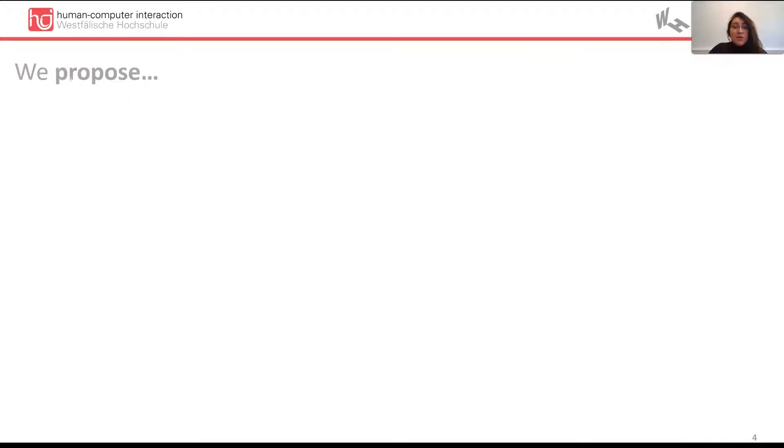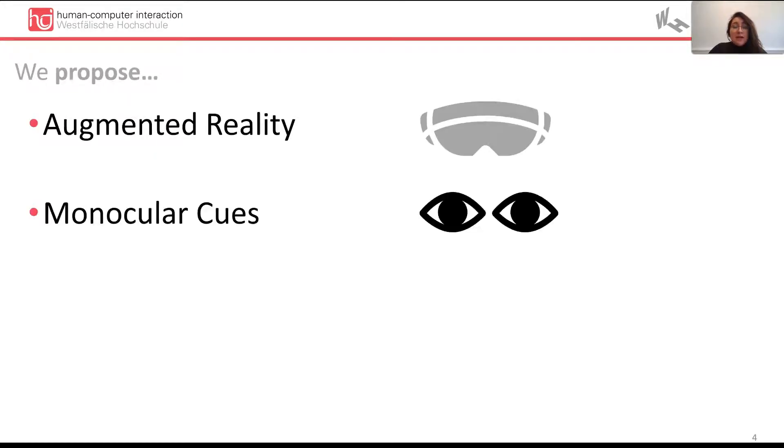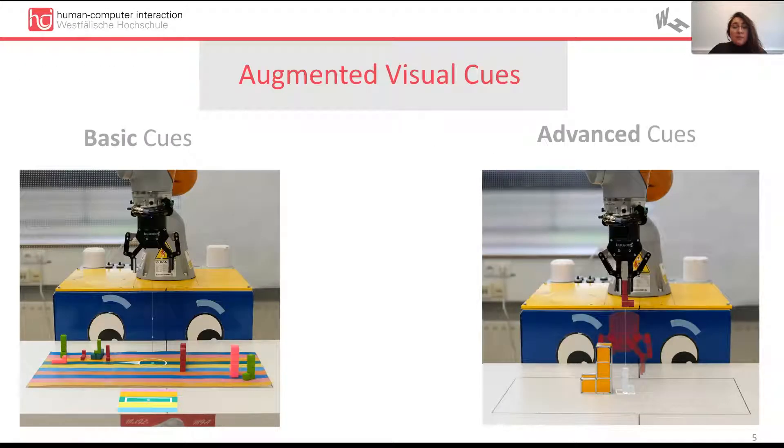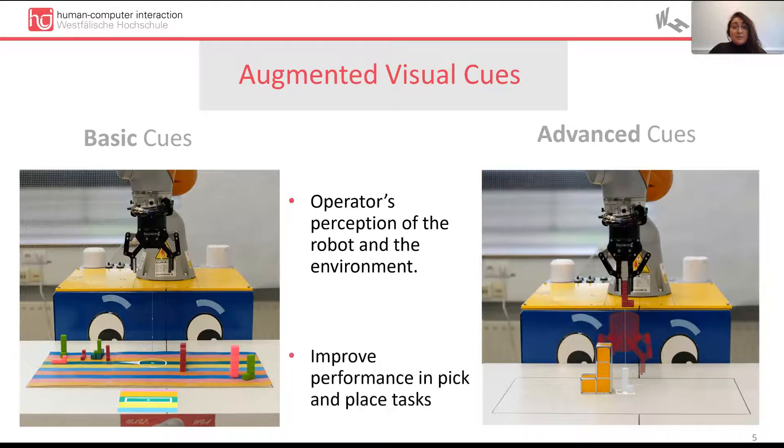That is why we propose to use Augmented Reality and elements from monocular depth cues, which are visual cues perceived only with one eye such as lighting and interposition, to present two designs of visual cues. We name them Augmented Visual Cues, and they aim to enhance the operator's perception of the robot and the environment and improve performance in pick-and-place tasks.